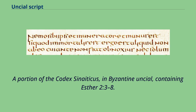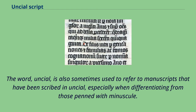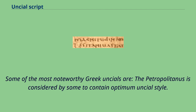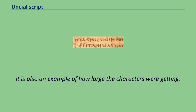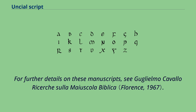A portion of the Codex Sinaiticus in Byzantine Uncial, containing Esther 2:3–8. The word 'Uncial' is also sometimes used to refer to manuscripts that have been scribed in Uncial, especially when differentiating from those penned with minuscule. Some of the most noteworthy Greek Uncials include the Petropolitanus, considered by some to contain optimum Uncial style and also an example of how large the characters were getting. For further details on these manuscripts, see Guglielmo Cavallo, Ricerche sulla Maiuscola Biblica.